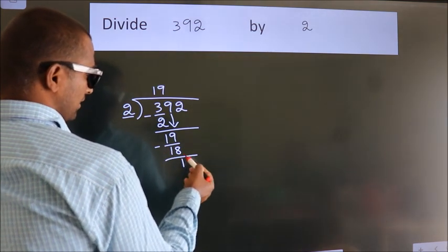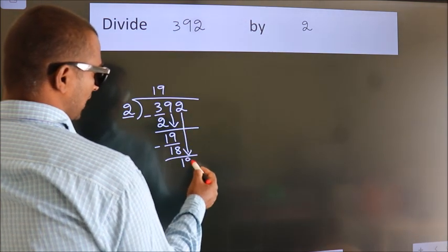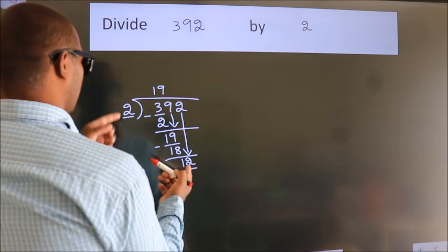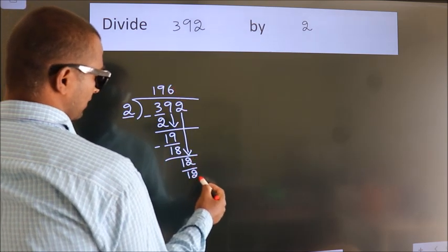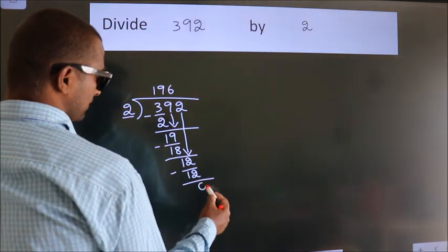After this, bring down the beside number. So 2 down. So 12. When do we get 12? In 2 table, 2 6 12. Now we subtract. We get 0.